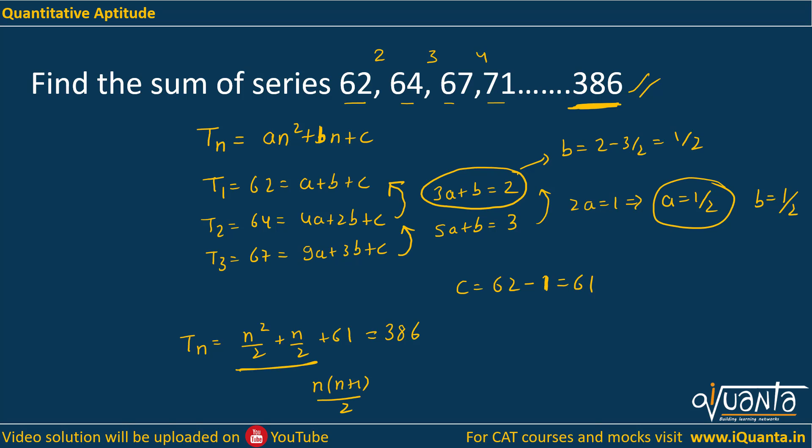We will be getting N(N plus 1) by 2 equal to 325. This gives me N(N plus 1) equal to 650. So if you solve this, you will be getting N equal to 25. So that means we have to find out sum till 25th term.